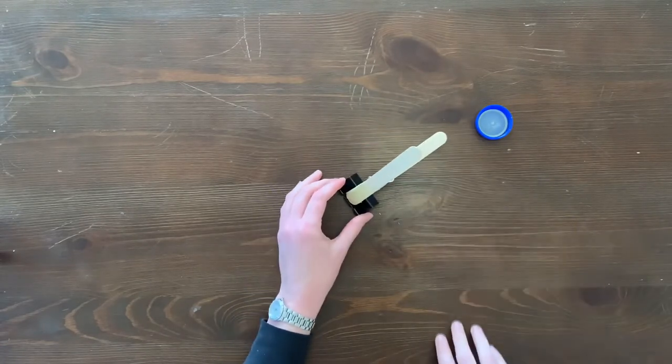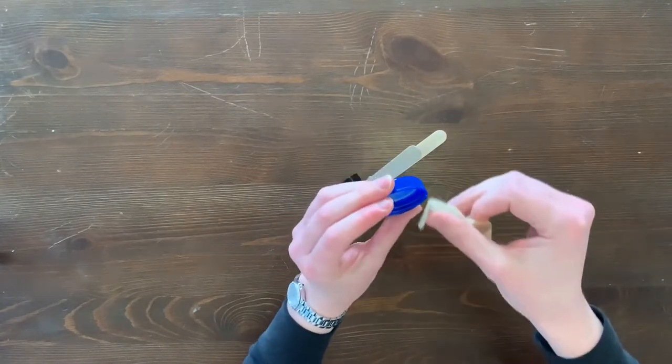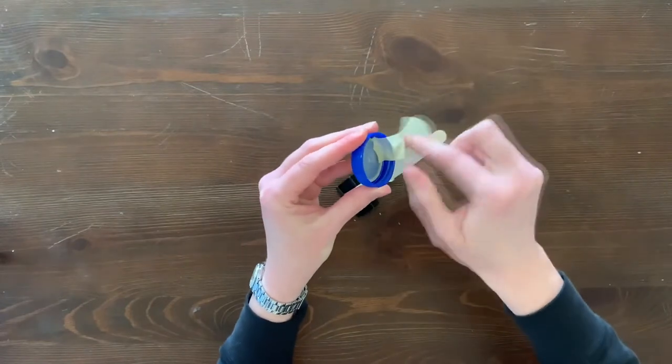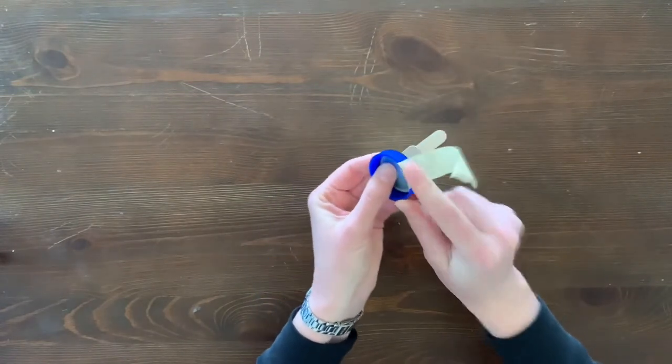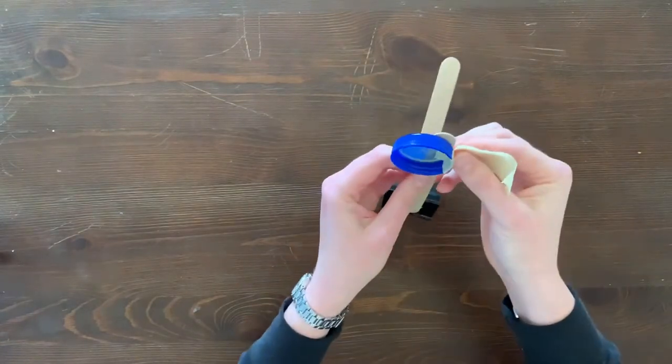Next, we'll attach the bottle cap to one of the craft sticks using about 4 to 5 inches of masking tape. This is going to be the lever of our catapult. We want to leave about a quarter inch of the craft stick sticking out past the edge of the bottle cap when we launch our projectiles.